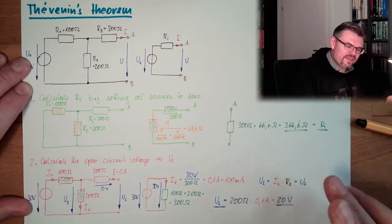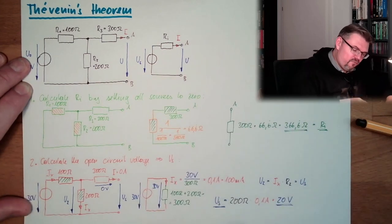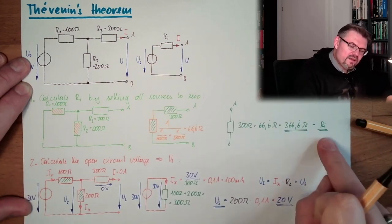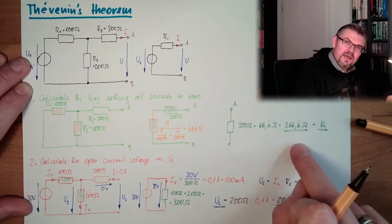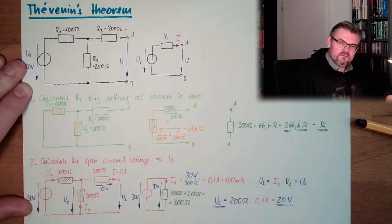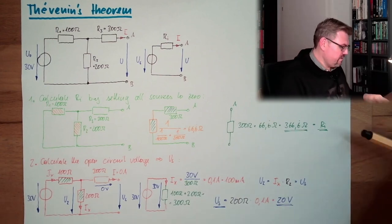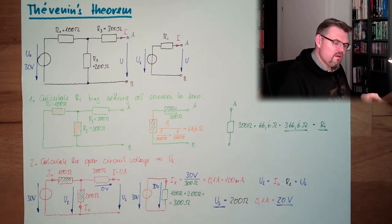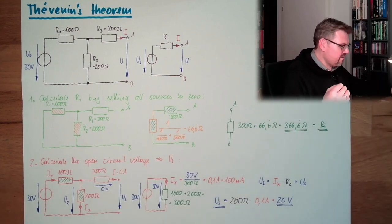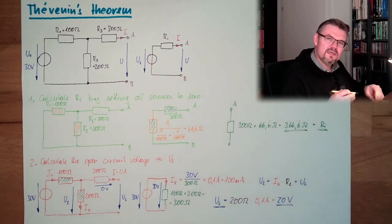If we take a voltage source which has a source voltage of 20 volts and an internal resistance of 366.6̄ ohms, it behaves exactly like this circuit. This is how you can use the Thévenin theorem to replace a complicated network with a simpler one.